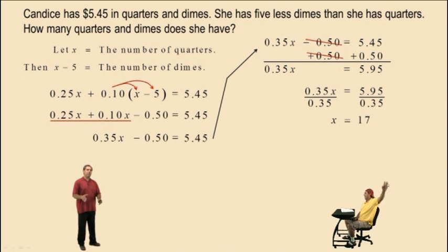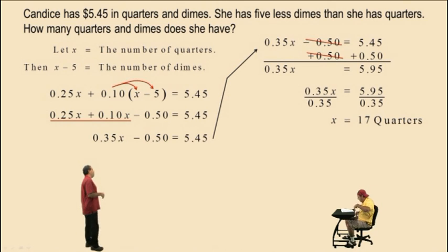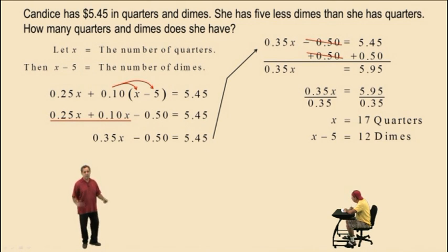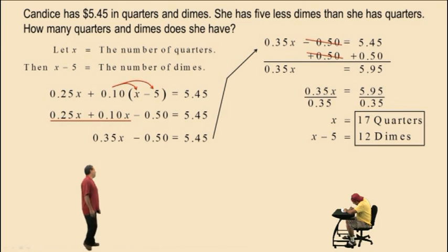So remember, x represented the number of quarters. So there are 17 quarters. Now x subtract 5 represents the number of dimes. Well, if x is 17, then 17 subtract 5 is 12. And that represents the number of dimes. It makes sense because we know there's 5 less dimes than there are quarters. If we look at it, we have 17 quarters and we have 5 less dimes, which is 12. 12 dimes is $1.20. 17 quarters is how much, Charlie? 4.25. Very nice there. And if you add $4.25 to $1.20, you do get a total of $5.45. That's it for now. We'll see you again soon.